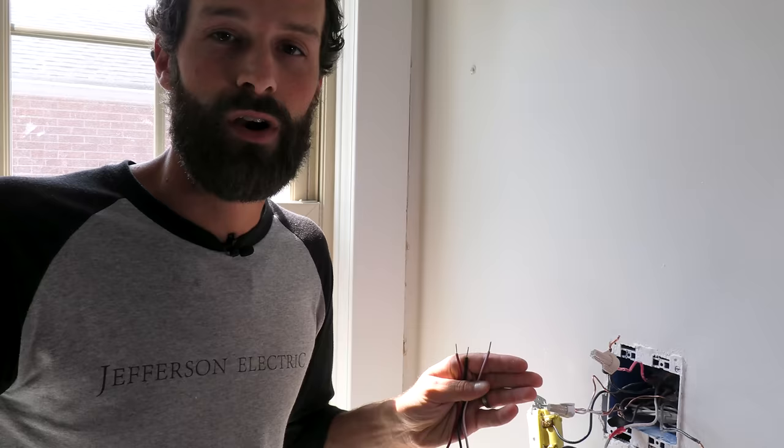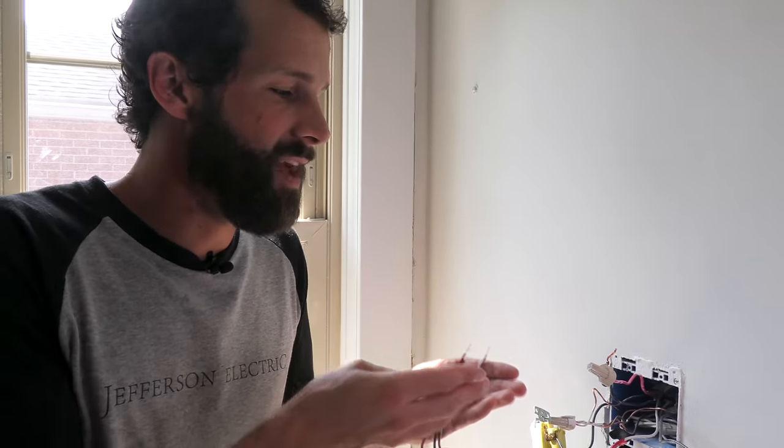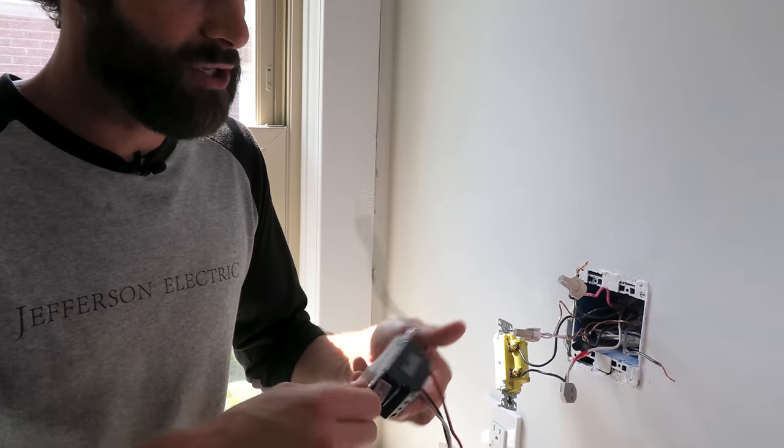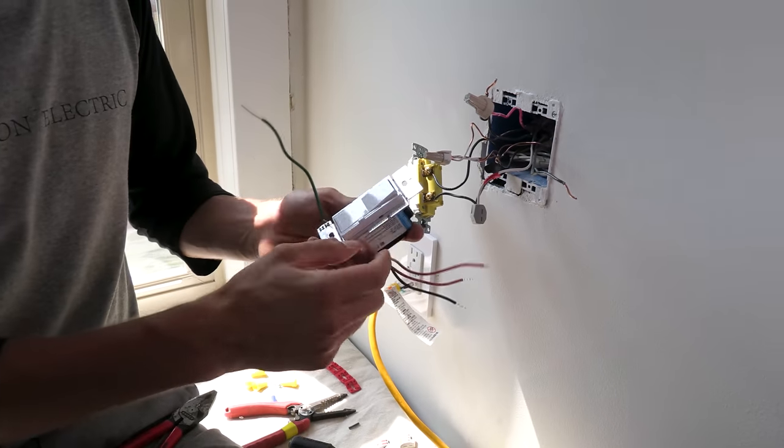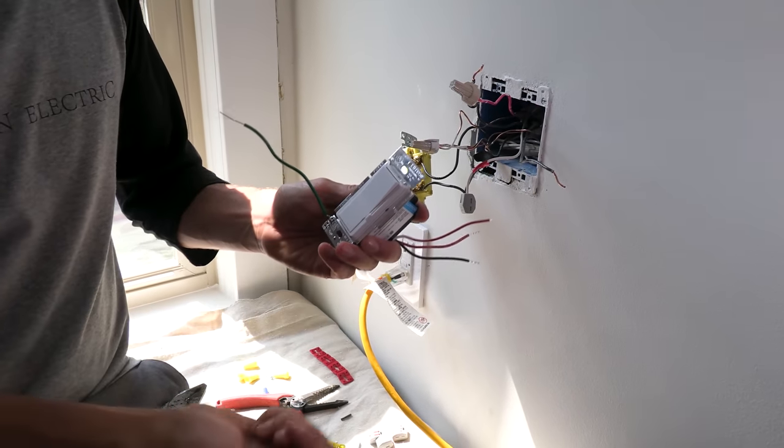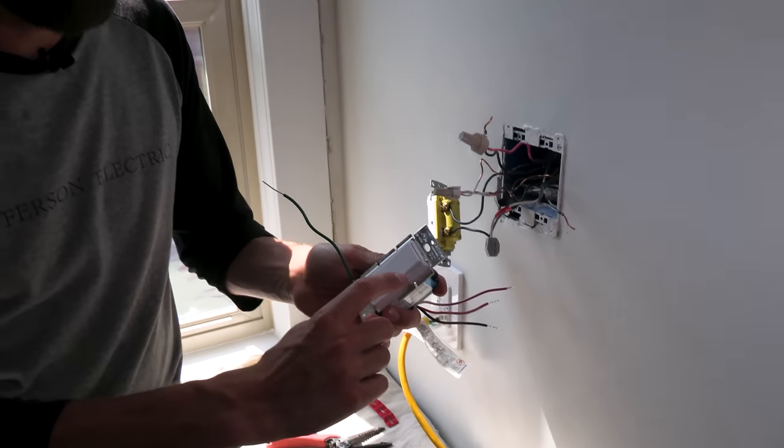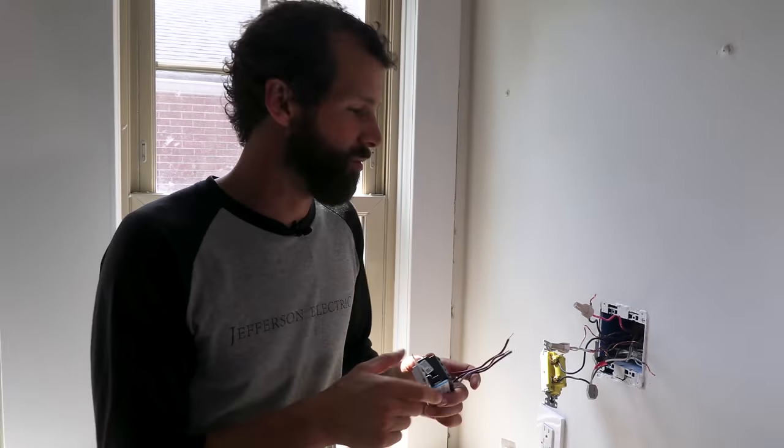you can only have one dimmer on a three-way lighting circuit. And the reason for that is if you've got dimmers at both locations, you'll be constrained to the lowest common denominator. If one's dimmed down all the way, and you go to the other dimmer, and you try to dim it up, nothing's going to happen. You're constrained by the lowest common denominator. So, one dimmer on a three-way or a four-way.